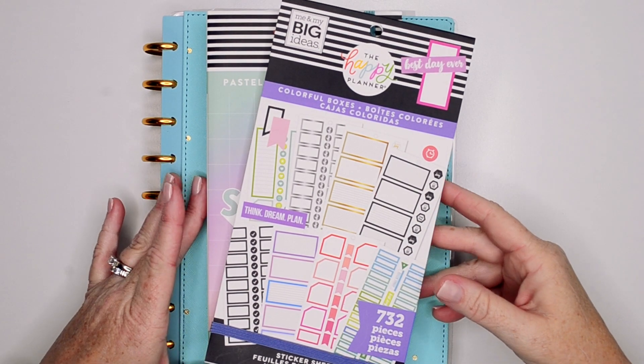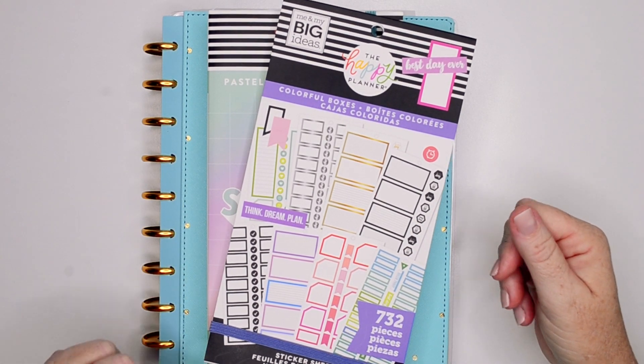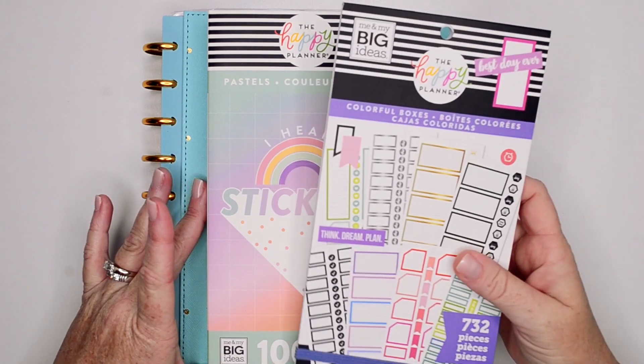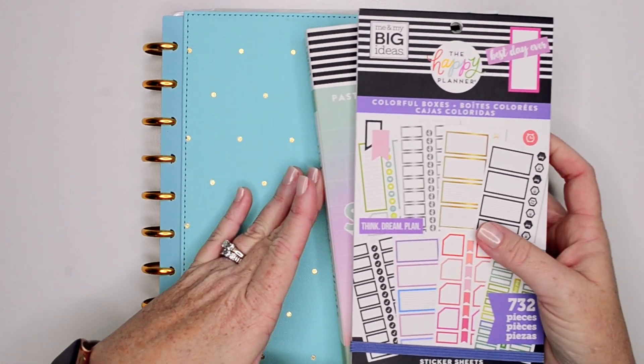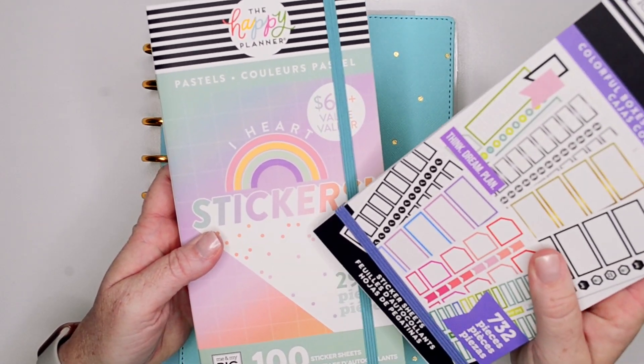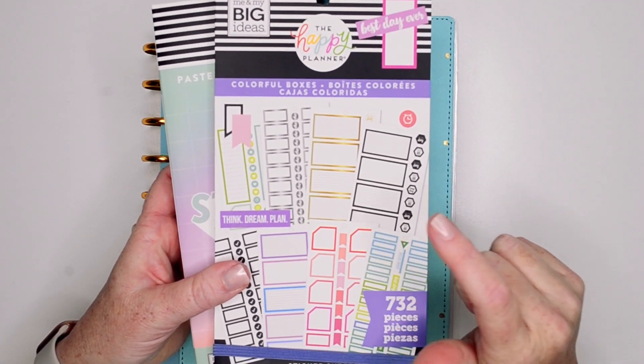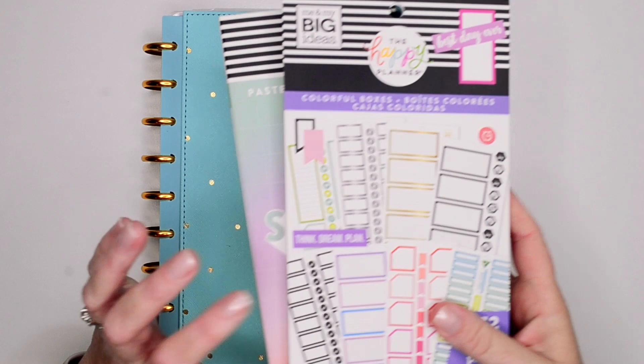Hey guys, it's Casey. Welcome back to my channel. If you're new here, thank you so much for stopping by. Today I'm going to be planning in my classic size encourager layout Happy Planner, and I'm going to be using the mega pastel sticker book and some of the black colorful boxes out of this new one.